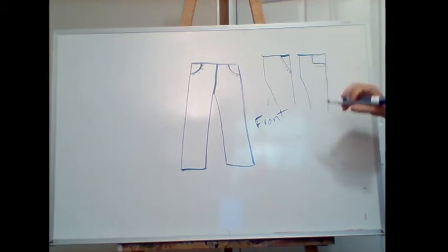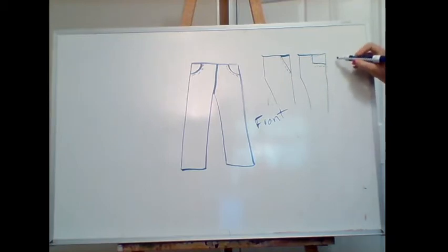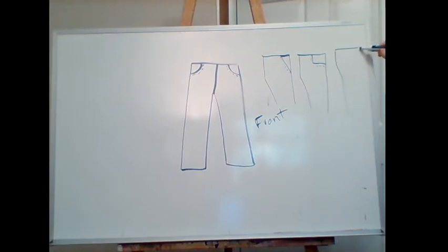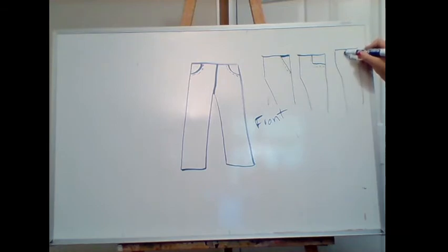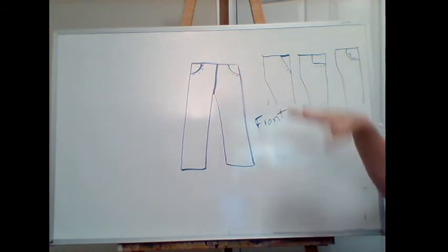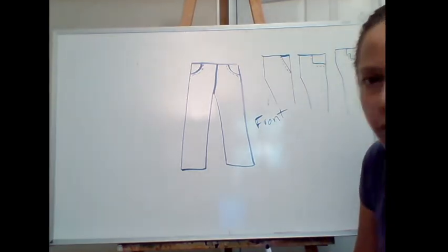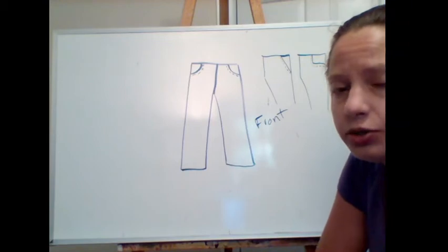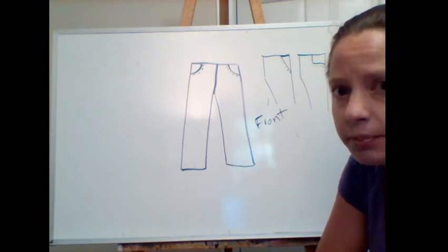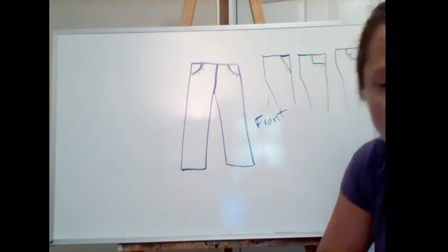Dress pants pockets will typically be a straight line from the waist down to the high hip area, with top stitching. You can also make it angular — an angled shape pocket. Really you can do anything you want. As long as you want it to be a functioning pocket and it's big enough for your hand to fit through, you can do that line in whatever shape you want.